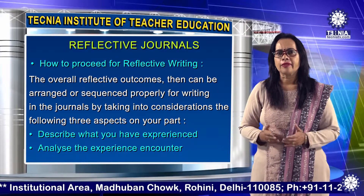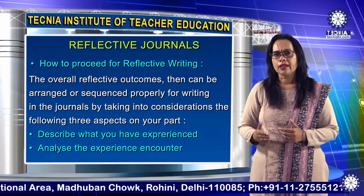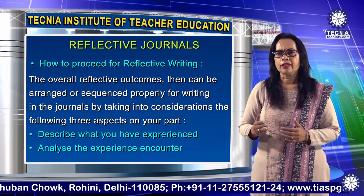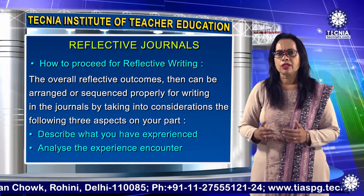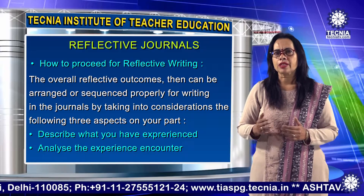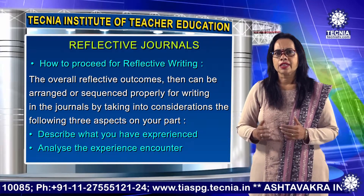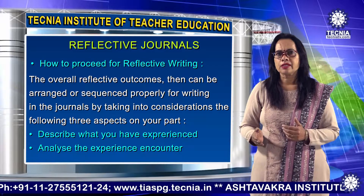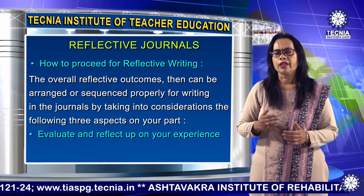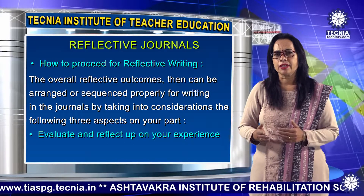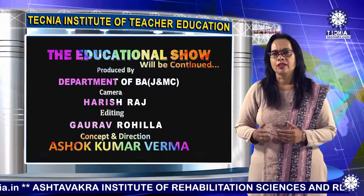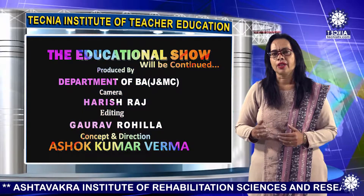The overall reflective outcomes can then be arranged or sequenced properly for writing in the journal by taking into consideration the following three aspects: describe what you have experienced, analyze the experience encountered, and evaluate and reflect upon your experience. I hope you understood the topic of Reflective Journals. Thank you very much.